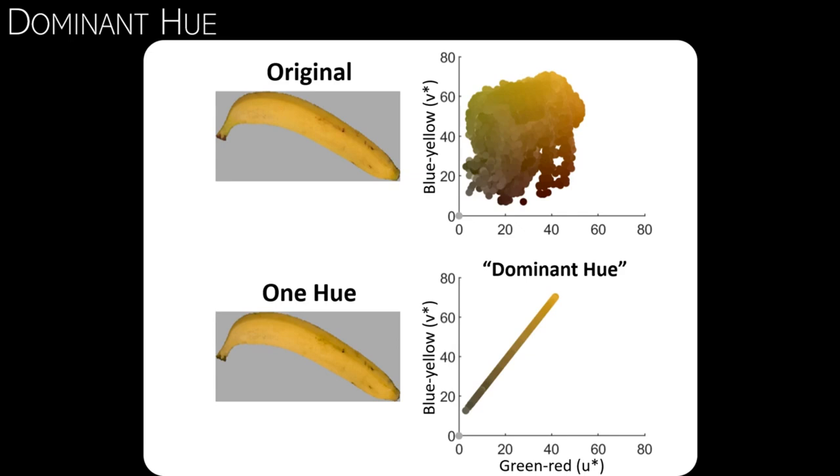But this implies that the banana in the lower image has only one single hue. This hue may be found by a principal component analysis, and we will call it dominant hue. Yet I hope you can see with your own eyes that the two bananas on the left are strikingly similar.